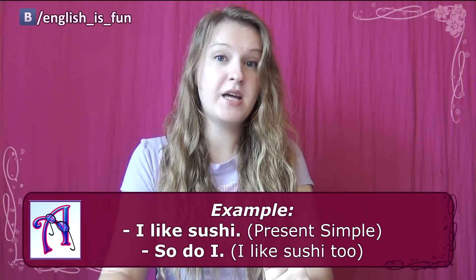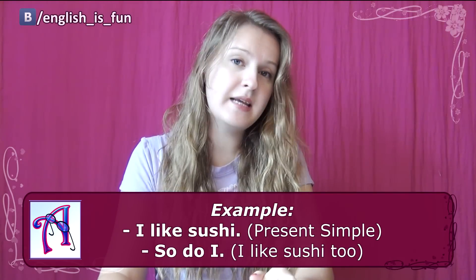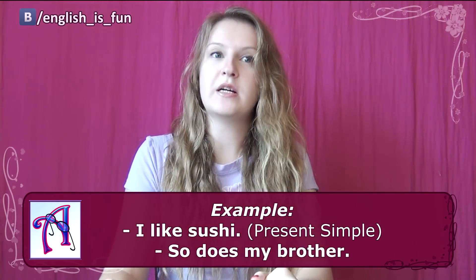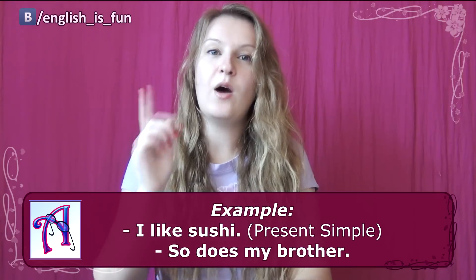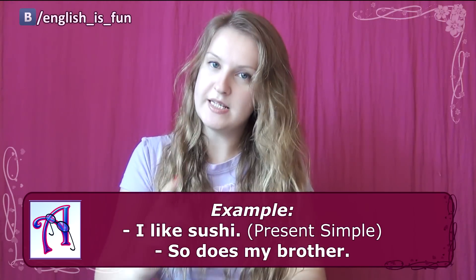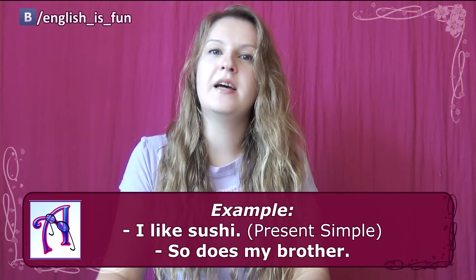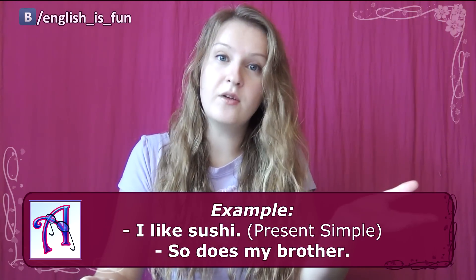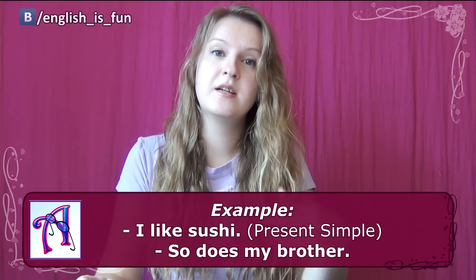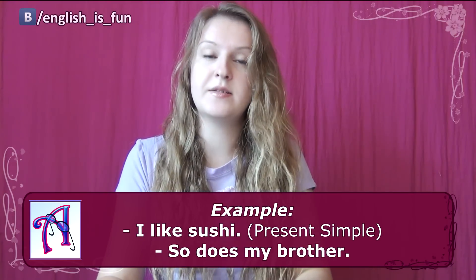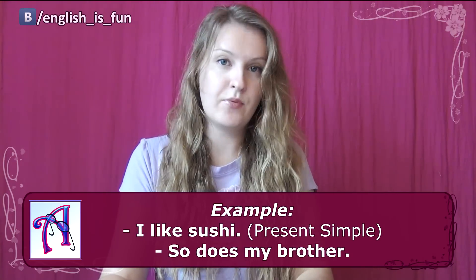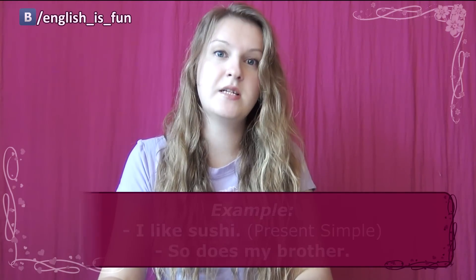So do I. But I can also talk about somebody else. For example, I can say 'so does my brother.' Notice that in this case the auxiliary verb changes, because the pronoun changes. Instead of 'do,' we use 'does,' because I say 'my brother.' My brother does like sushi.